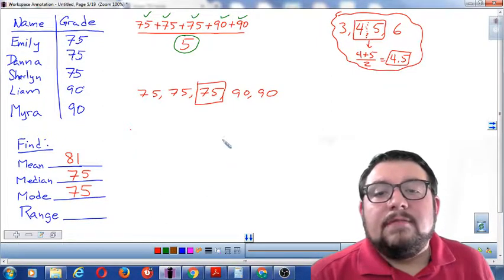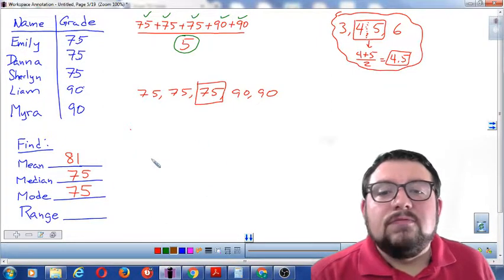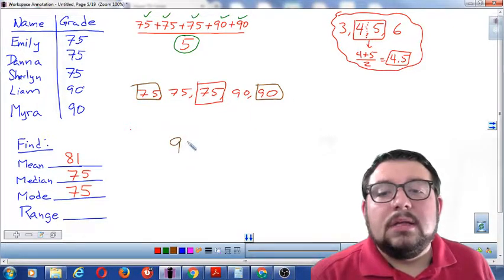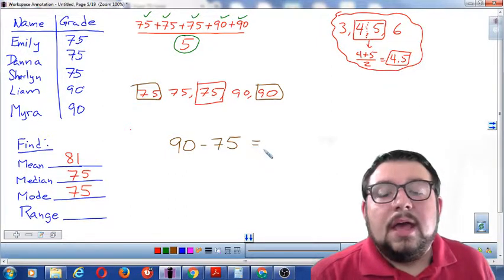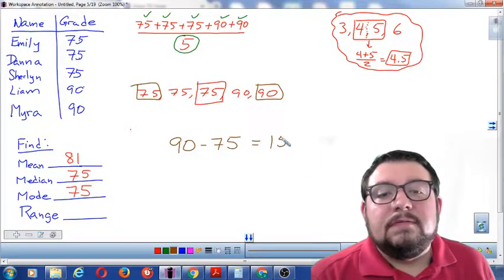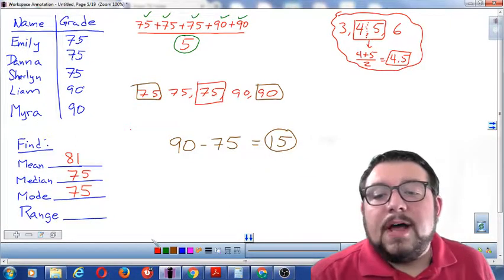So, now we're going to have range. Range is really easy. You just get the biggest number, and you subtract the smallest number. So, let's take the biggest number from the data set, subtract the smallest number from the data set, and obviously, 90 minus 75 equals 15. So, our final range will be 15.